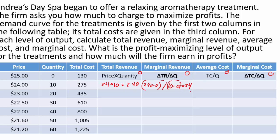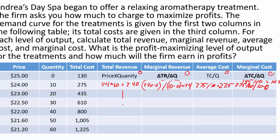Average cost is our total cost of 275 divided by our quantity of 10, which gives us an average cost of $27.50. Our marginal cost is the change in total cost — 275 minus 130 — divided by 10 (the change in quantity), which is 145 divided by 10, equaling 14.5. Calculate all those down the columns using those examples.